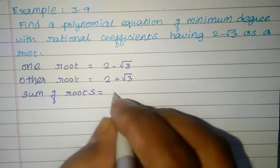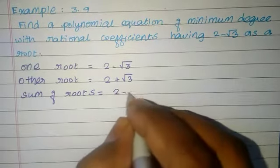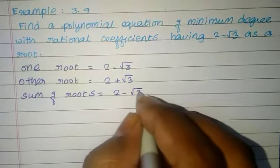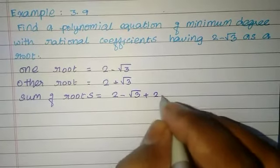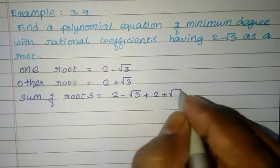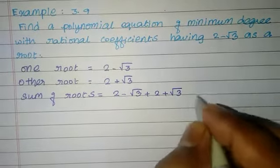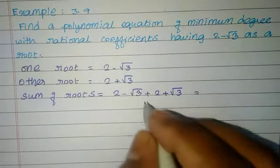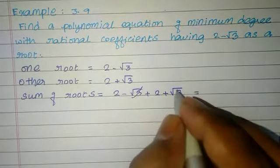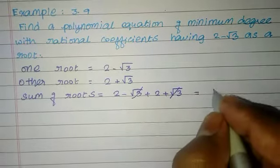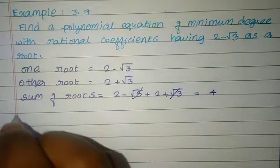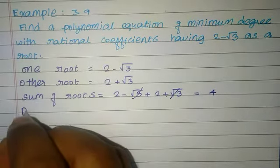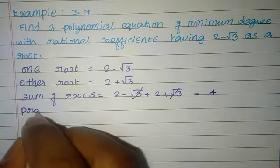Sum of roots equals (2 minus root 3) plus (2 plus root 3). The root 3 terms cancel, giving 2 plus 2 equal to 4.